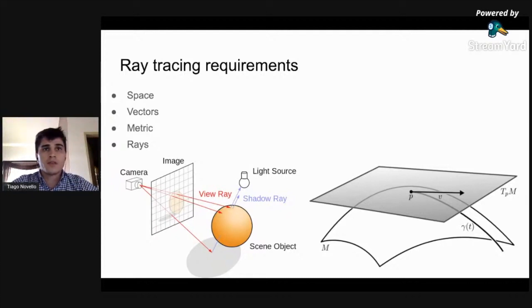Second, to simulate effects produced between the lights and the scene, we need a tangent space with a scalar product at each point. And third, we need a ray space leaving a point in any direction and its intersection with the scene objects.